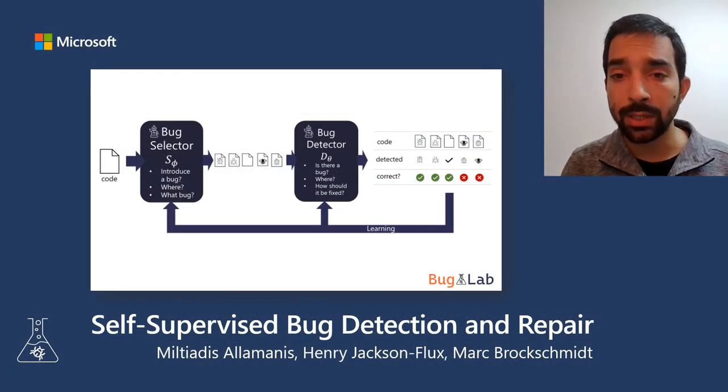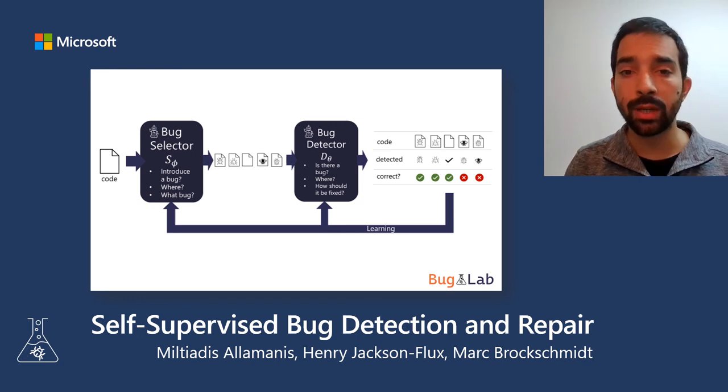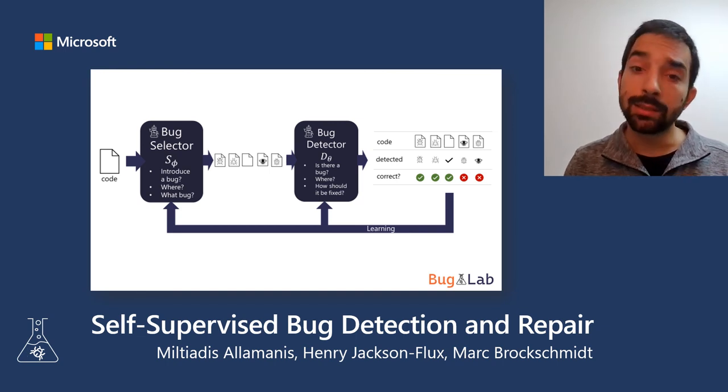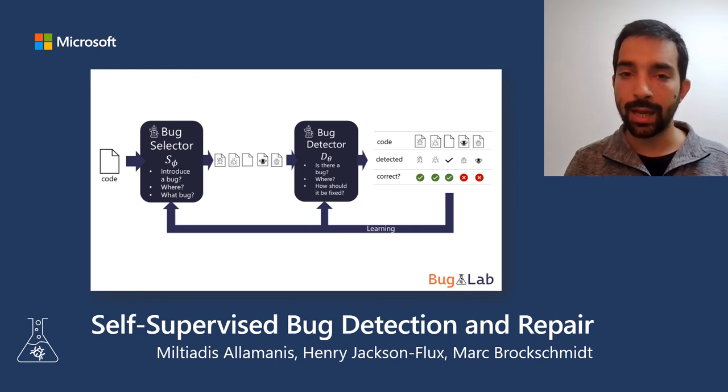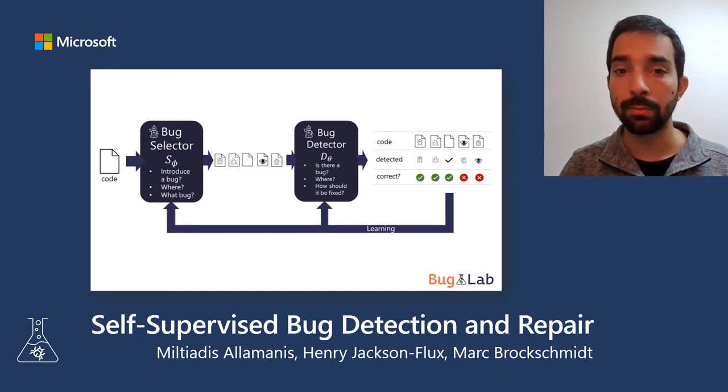To conclude, we have presented a framework for self-supervised bug detection and repair. Through that framework, we can train better neural models that find bugs in code. Still, there are many important research opportunities ahead, towards practical bug detection and repair with deep learning. For more information, please join our poster session or look at the paper. Thank you.